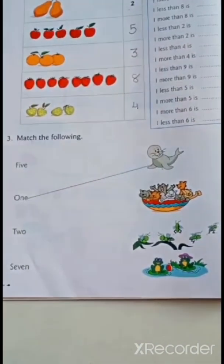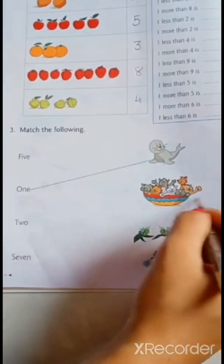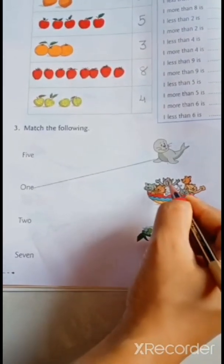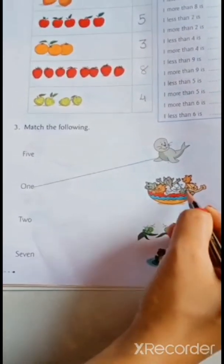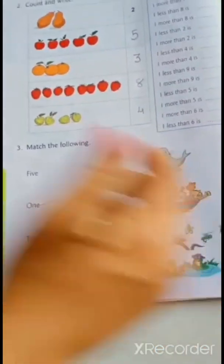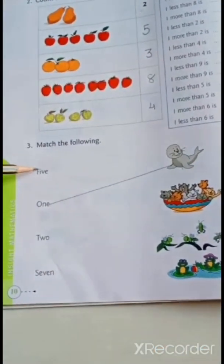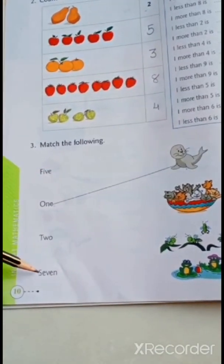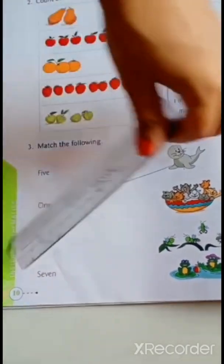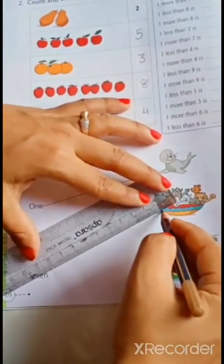Next. Kittens are given. Count. How many kittens are here? 1, 2, 3, 4, 5, 6, 7 kittens. So, where is 7 written? Here. No. Here. No. Here. S, E, V, E, N, 7. So, join this way.